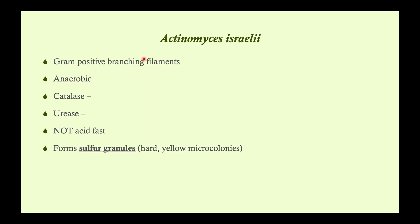The characteristics of actinomyces, in particular actinomyces israelii: they are gram-positive branching filaments, they are anaerobic. Unlike nocardia, they are catalase negative and urease negative — nocardia were positive for both of those. Actinomyces is not acid fast; remember nocardia was weakly acid fast. Really importantly, actinomyces forms sulfur granules, which are not actually made of sulfur contrary to their name. They are hard yellow microcolonies just florid with organisms. You can see them when looking at an abscess or infection with actinomyces.